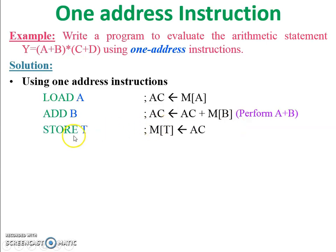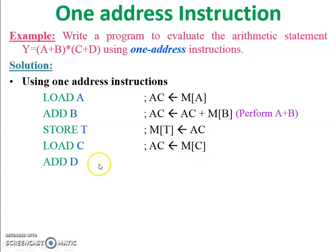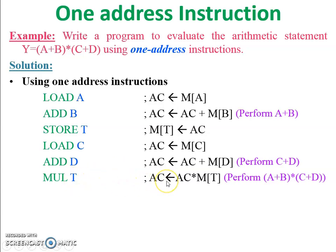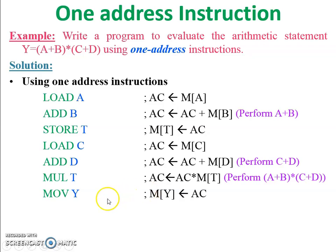The result A+B is stored inside T. LOAD C — content of C stored in accumulator. ADD D — performs C plus D, final answer stored in accumulator. MUL T — accumulator has C+D and T has A+B, so it performs (A+B) × (C+D). Finally, MOVE Y or STORE Y — accumulator data stored in memory location Y.